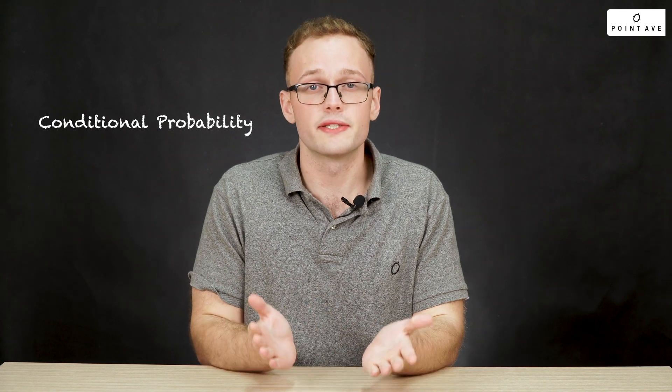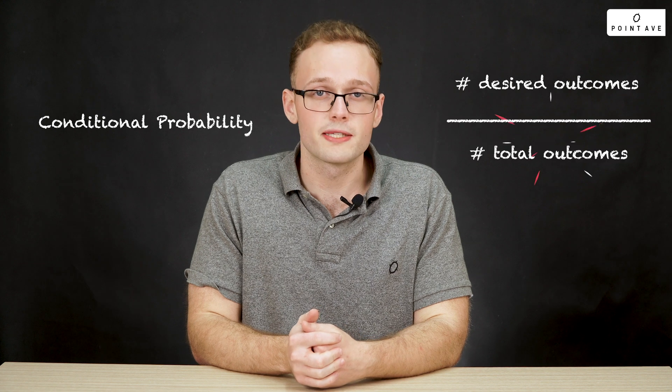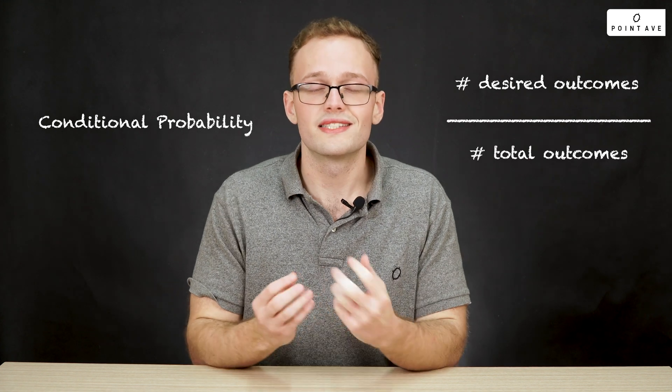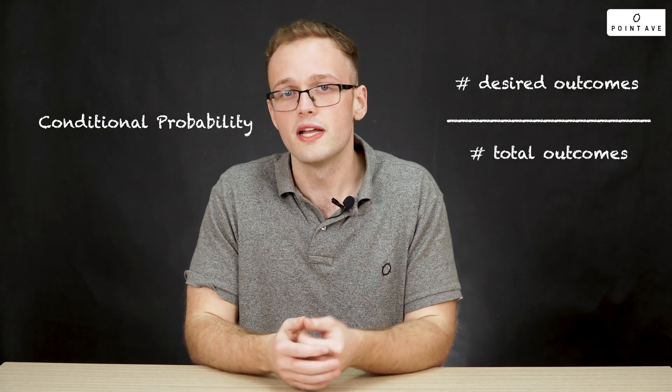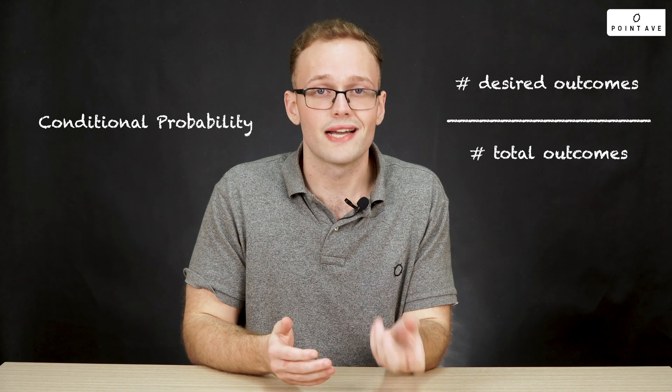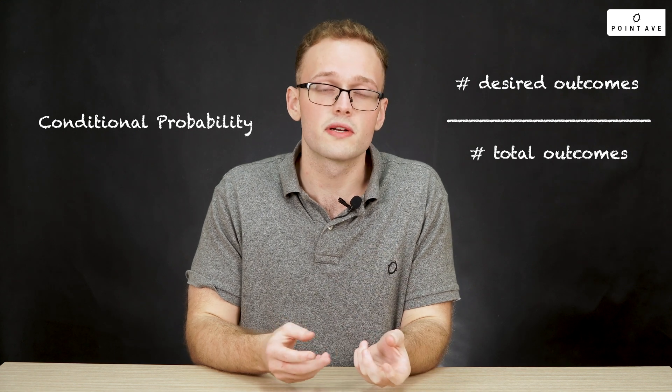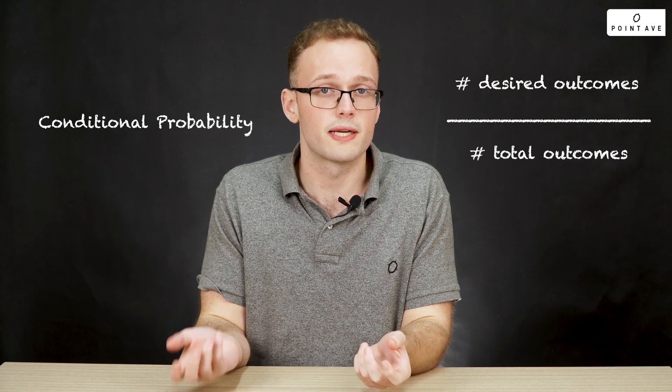Last week, we learned probability. This week, we need to learn conditional probability. This might sound scary, but it's very similar to the probability we already know. We even use the same formula: number of desired outcomes over number of possible total outcomes. The only difference is we need to be more careful about defining what are the desired outcomes and what are the total possible outcomes.